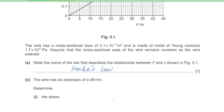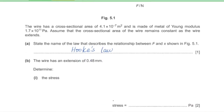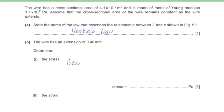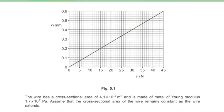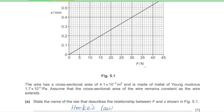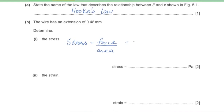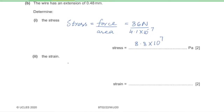Part B: the extension is 0.48 mm. Part 1: calculate the stress. Stress = force / area. From the graph at 0.48 mm extension, the force is 36 N. Stress = 36 / (4.1 × 10⁻⁷) = 8.8 × 10⁷ Pa.